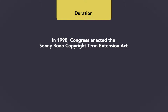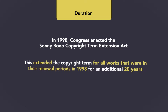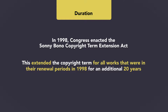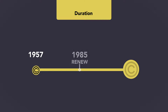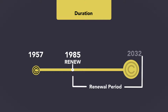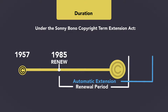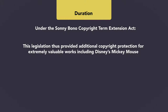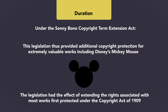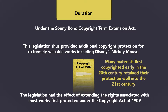In 1998, Congress enacted the Sonny Bono Copyright Term Extension Act. This extended the copyright term for all works that were in their renewal periods in 1998 for an additional 20 years. For example, if a work was originally copyrighted in 1957 and renewed in 1985, its renewal period would have run until 2032, which was 47 years from the renewal date in 1985. Under the Act, the renewal period was automatically extended to 2052, which is 20 years beyond the original 2032 renewal term. The legislation provided additional copyright protection for extremely valuable works, including Disney's Mickey Mouse, and extended the rights associated with most works first protected under the Copyright Act of 1909.